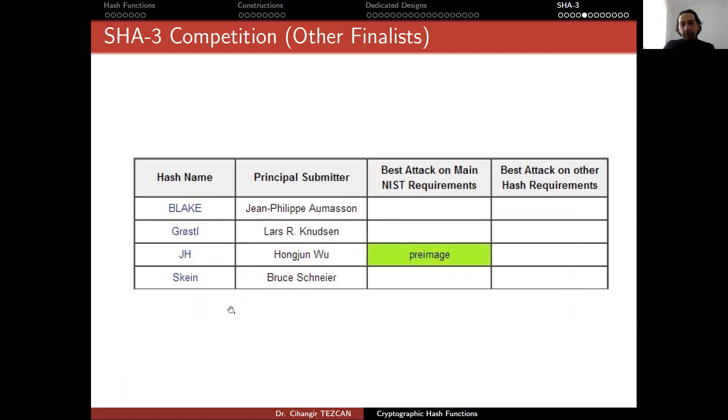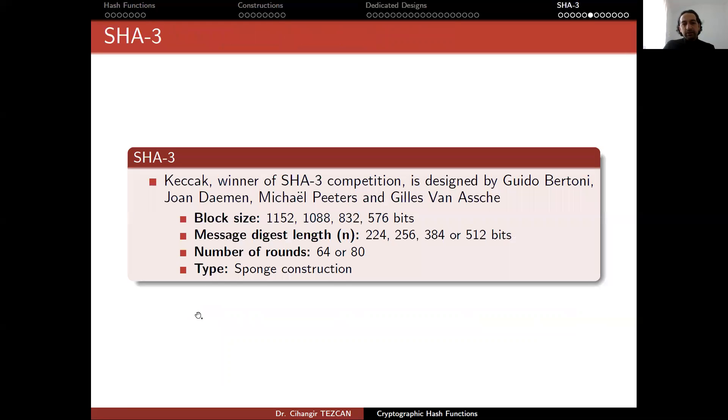There were five finalists. Of course, one of them won the competition and four of them were eliminated. These were the eliminated ones. The winner was Keccak. Keccak won the competition, got the name of SHA-3. It was designed by Guido Bertoni, Joan Daemen, Michaël Peeters, and Gilles Van Assche.